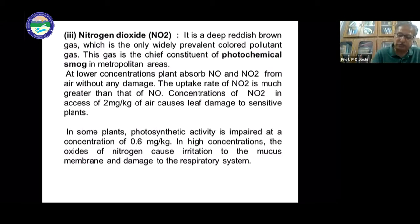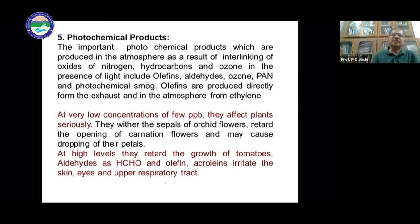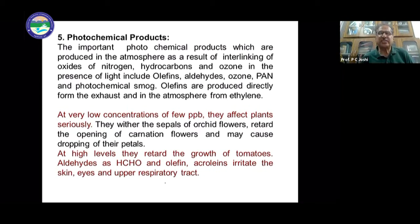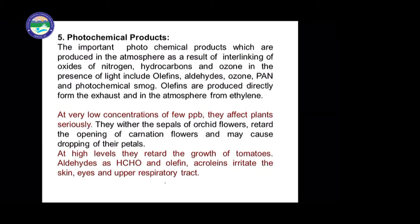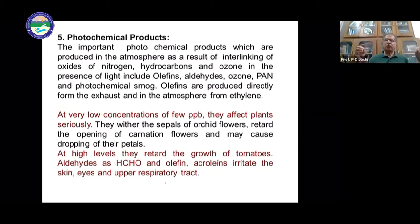There are certain important photochemical products produced in the atmosphere as a result of interaction of oxides of nitrogen, hydrocarbons, and ozone in the presence of high-intensity light, including polyenes, aldehydes, ozone, etc. When these compounds form a blanket, we say that photochemical smog is present in our atmosphere.